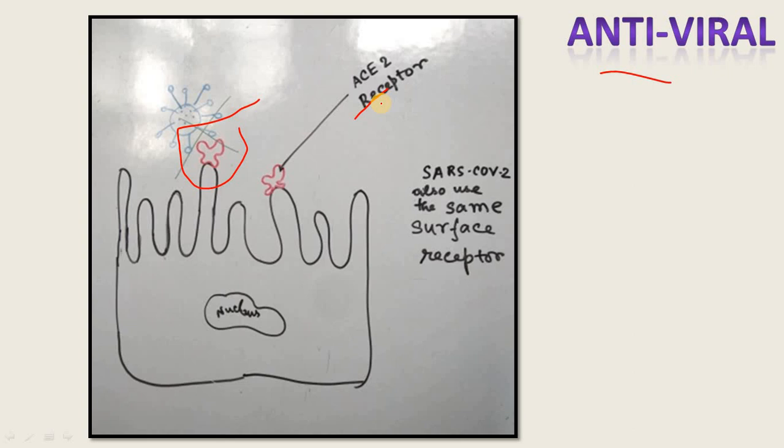Since SARS-CoV-2 also utilizes the same receptor, it can interfere with the ACE2 receptor and glycosylation SARS-CoV-2 attachment. It interferes with and blocks the attachment, preventing coronavirus infections.